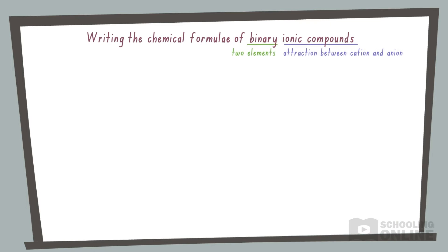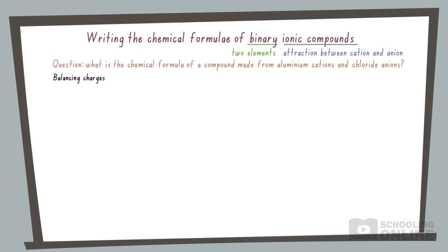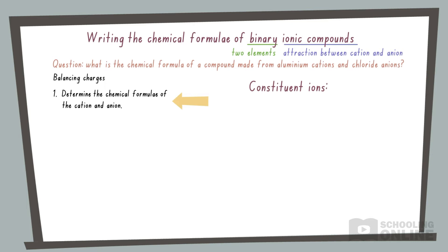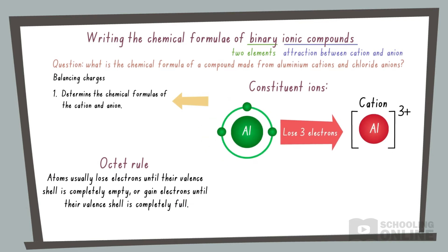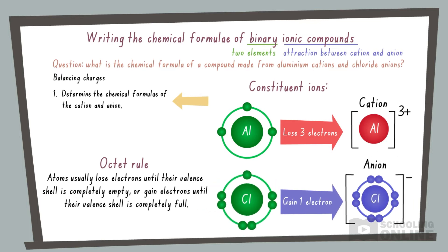If you're ready to move on, let's try writing the chemical formula of a compound made from aluminium cations and chloride anions by balancing their charges. First, we need to find the chemical formulae of the constituent ions. We can achieve this by applying the octet rule, which states that atoms usually lose electrons until their valence shell is completely empty, or gain electrons until their valence shell is completely full. Consequently, the aluminium cation has a charge of 3 plus and chloride has a charge of 1 minus.